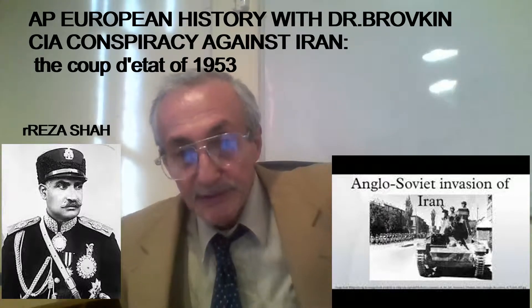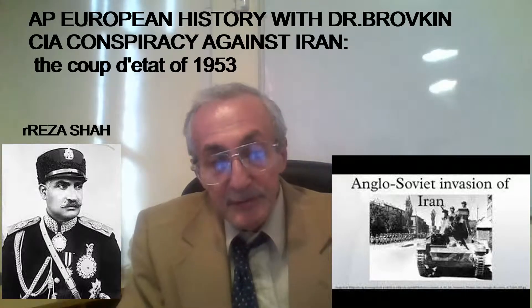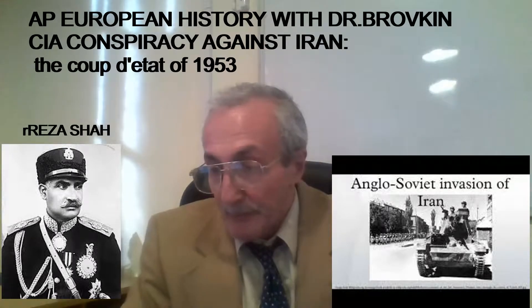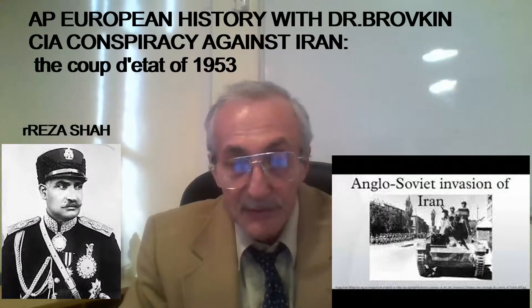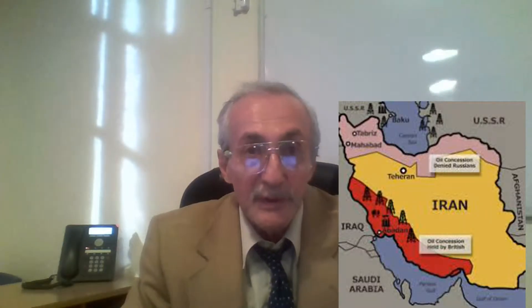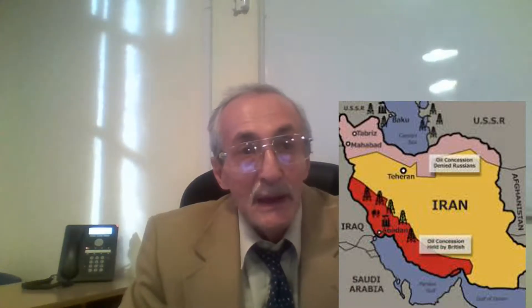Welcome to History of the Middle East with Dr. Brovkin. Our first video was on Iran under the first Shah, Pahlavi, and his overthrow by the Soviets, British, and Americans during World War II because they needed a supply corridor and because he was supposedly friendly with the Germans. We covered the years from 1919 to 1940-41. Now this would be post-war Iran — today's topic is Iran after World War II, especially the crisis of 1953, the Mossadegh government, and what was going to happen later: the rule of the Shah leading to the Iranian Revolution.